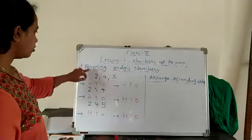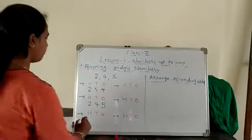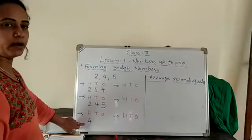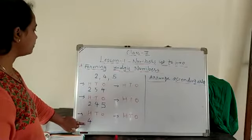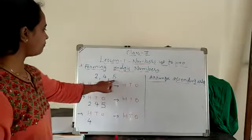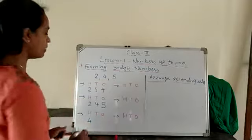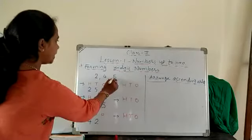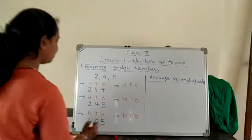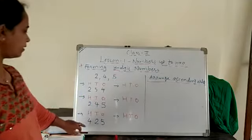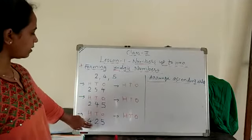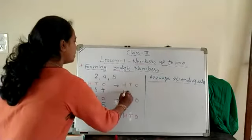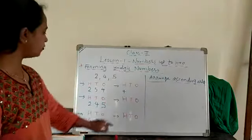Now change the 100s place. 2 is completed, now take 4. In the 100s place, take the number 4. Then the remaining digits are 2 and 5 — take any one in the 10s place. So I will take 2 and the last remaining is 5. So our third number is 425.